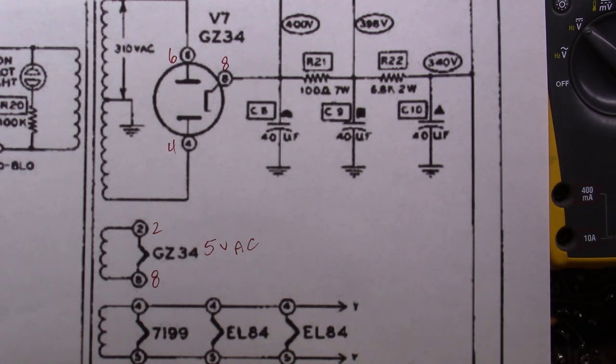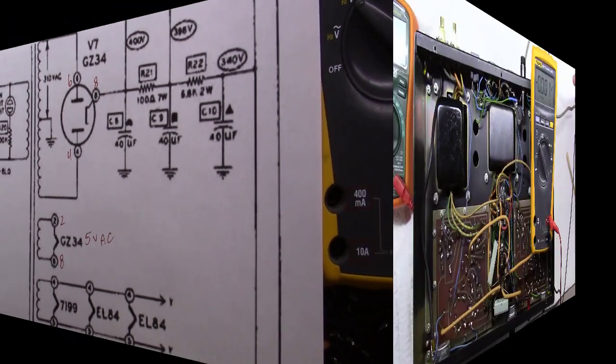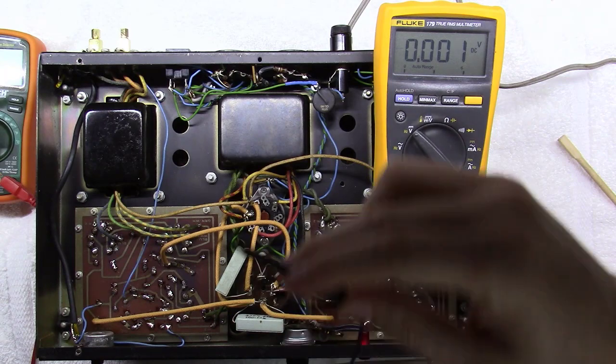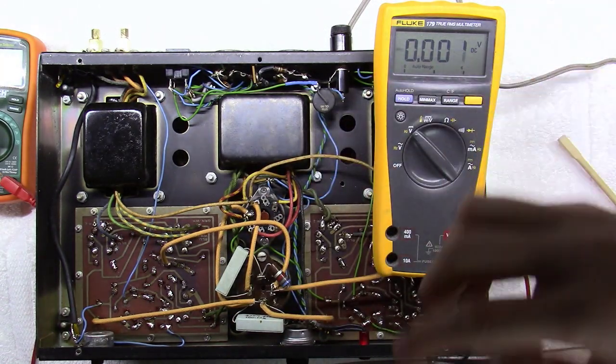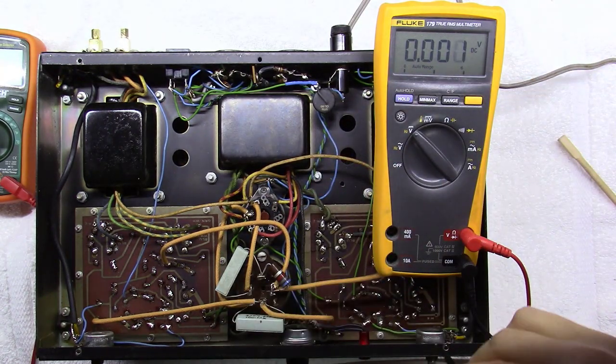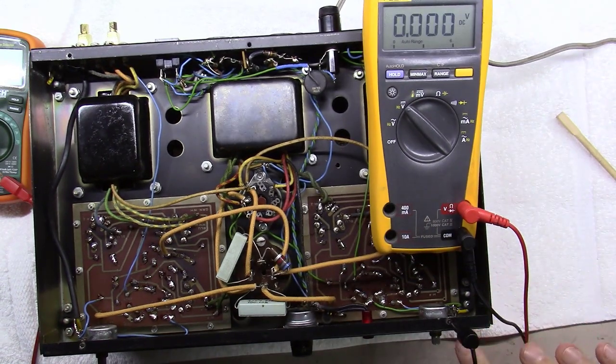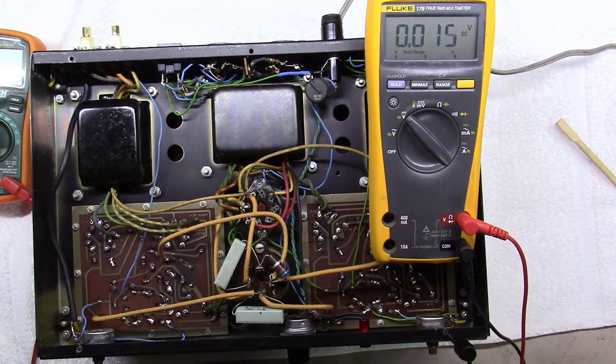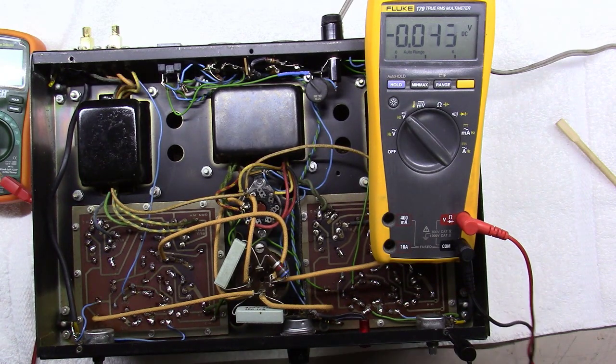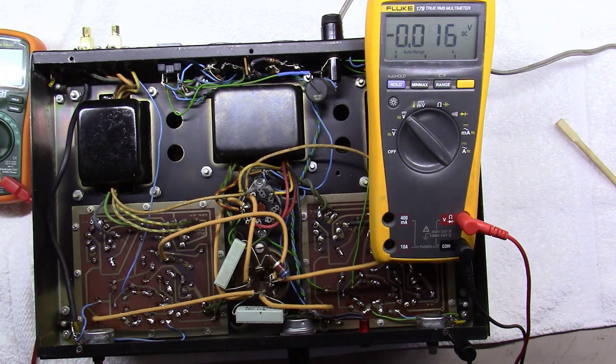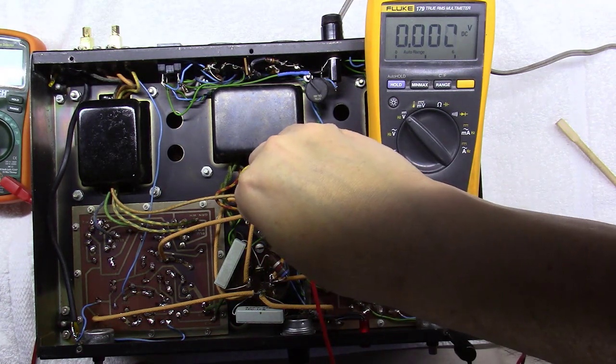So for that I'm going to jump over to the amplifier real quick. What I'm going to do is I'm going to take one side of this multimeter right here and I'm going to clip it on ground. As you can see here, I've just clipped it to the chassis of the amplifier. And then I'm going to take the other lead here. I've got this voltmeter set on DC volts right now. Let's go over here and measure pin number two.